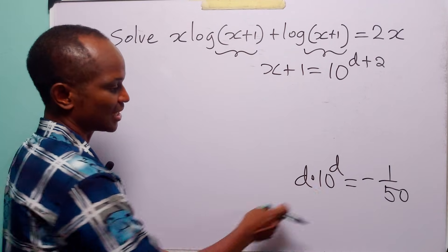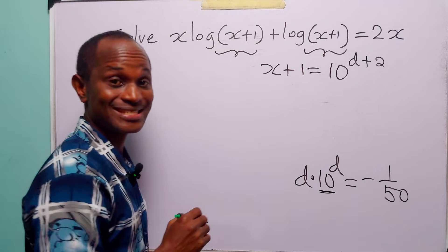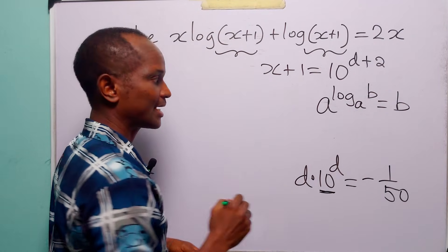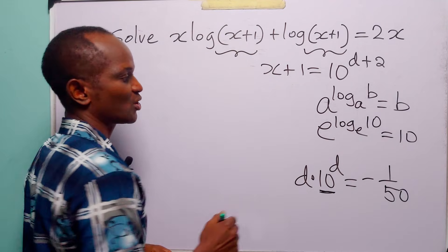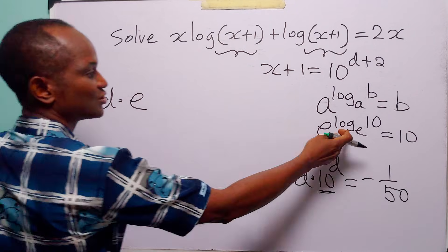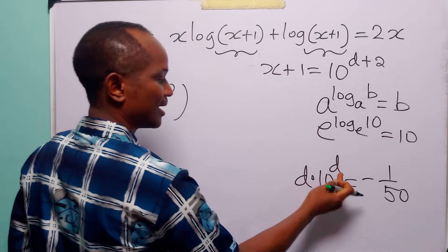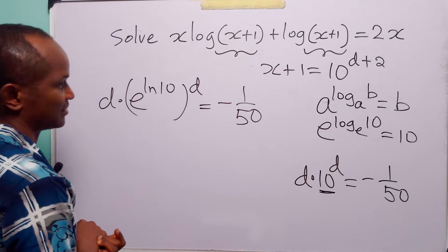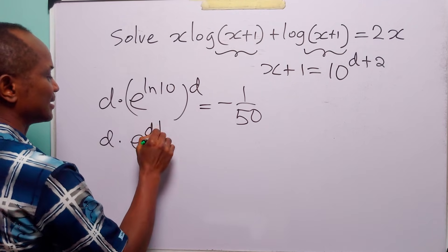To solve this equation, we apply the Lambert W function. First, we rewrite 10 using the identity that a to the power log base a of b equals b, which means e to the power ln 10 equals 10. So we write 10 to the power d as e to the power ln 10, raised to the power d. When we open this bracket, we have d times e to the power d times ln 10, equal to minus 1 over 50.